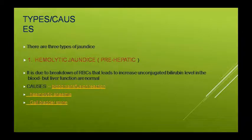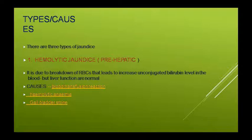Types और causes — तीन तरह के jaundice हो सकते हैं: pre-hepatic, hepatic और post-hepatic। Pre-hepatic को hemolytic jaundice भी कहते हैं, post-hepatic को obstructive jaundice भी कहते हैं। अगर blood में hemoglobin के ज़्यादा टूटने की वजह से jaundice हो रहा है तो उसे hemolytic या pre-hepatic jaundice कहते हैं। Liver में जाने के बाद अगर conjugation proper नहीं हो रही है तो वह hepatic jaundice cause करेगा।